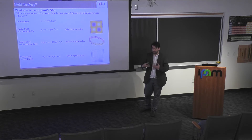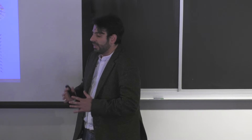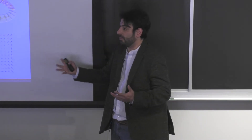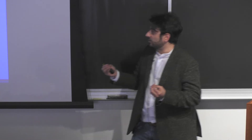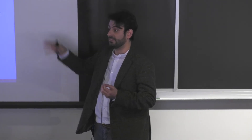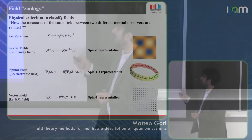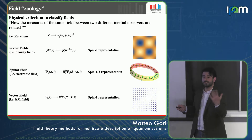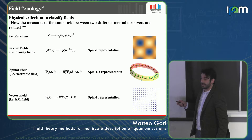Fields have a richer internal structure, so one of the first questions physicists ask is: how do they transform when we change the observer? The quantization procedure depends on the transformation properties of the field. Scalar fields transform trivially — they take spin-zero representation of the Lorentz group of special relativity. Representations are labeled by spin, and these fields live in the spin-zero representation.